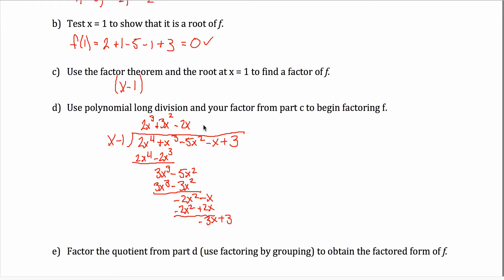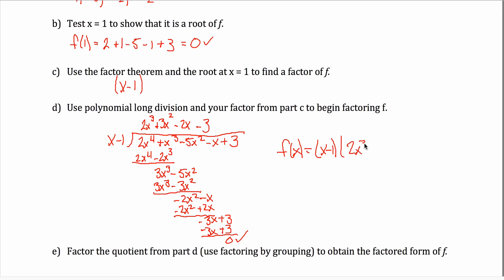To eliminate −3x, I toss a −3 up top. −3 times x gives −3x, and −3 times −1 gives +3. Subtracting, everything goes away — no remainder. That's exactly what I was hoping for. So f(x) can be written as (x − 1)(2x³ + 3x² − 2x − 3).